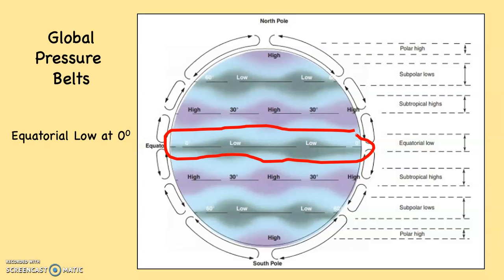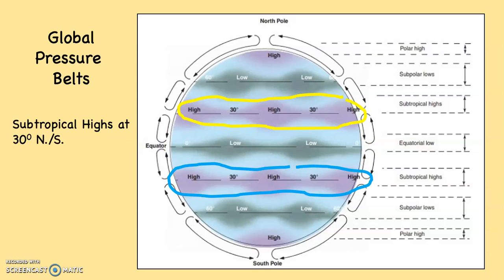Centered on the equator at zero degrees is what's known as the equatorial low. Everything you'd expect with low pressure is happening there: converging, rising air, clouds forming, precipitation falling. It should be no surprise that the great tropical rainforests on Earth are located there. Then at 30 degrees north and 30 degrees south — stretching over about 10 degrees of latitude, roughly 25 to 35 degrees in both hemispheres — we have what's known as the subtropical highs. Everything you'd expect with high pressure: descending, diverging air and clear blue skies. It should be no surprise that the great deserts of the world generally line up right in there.